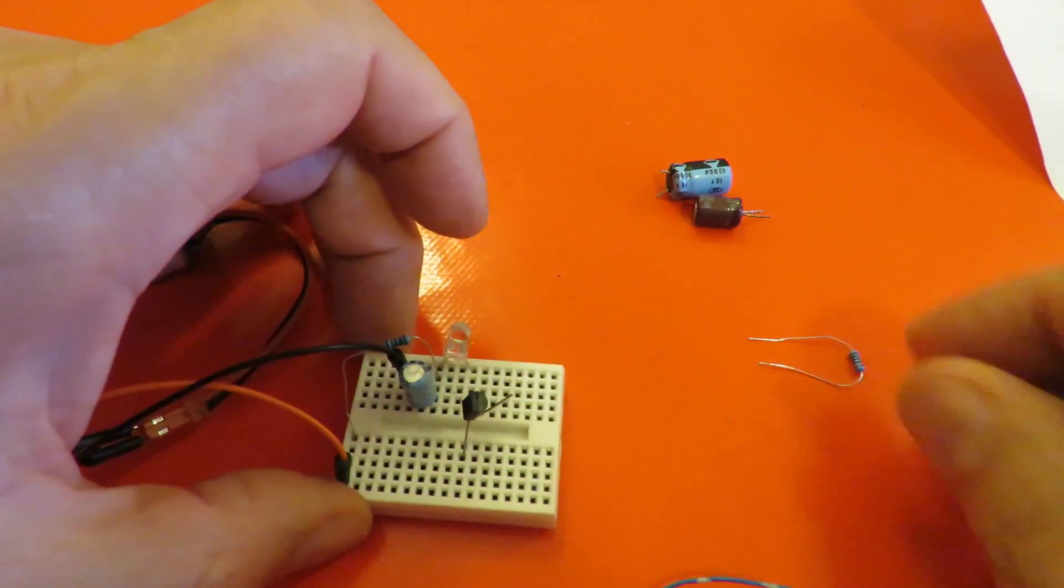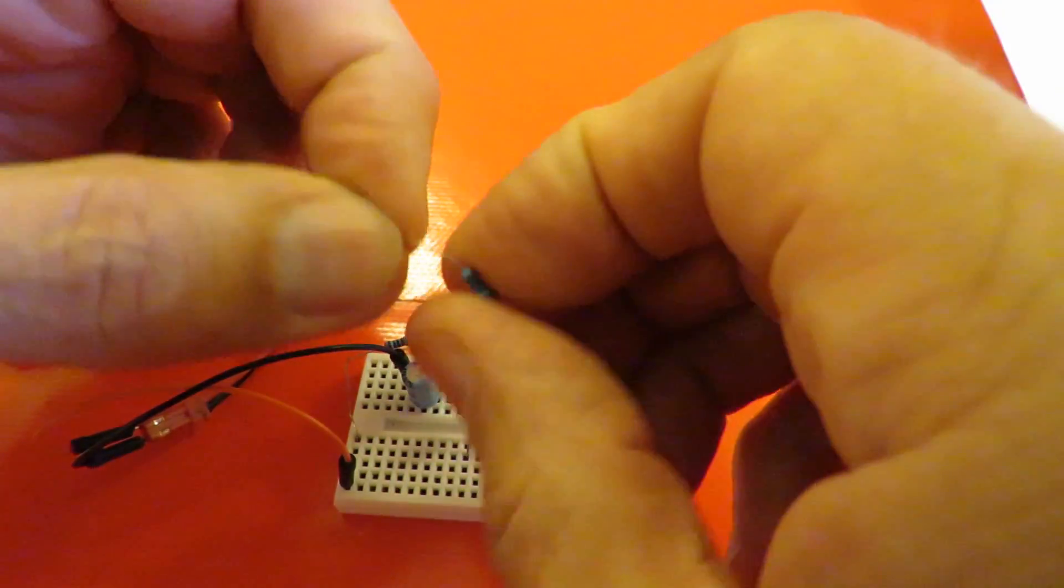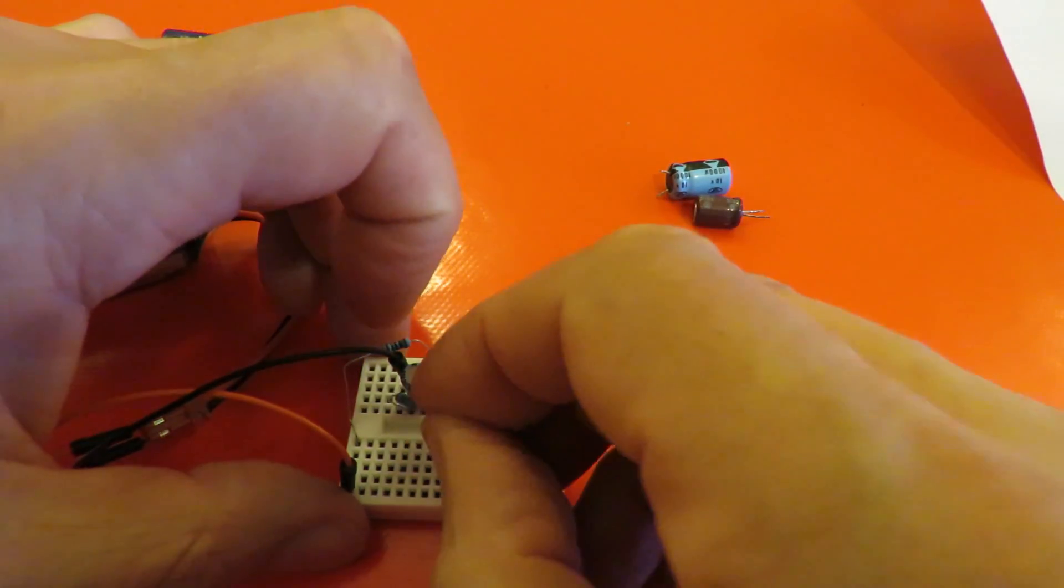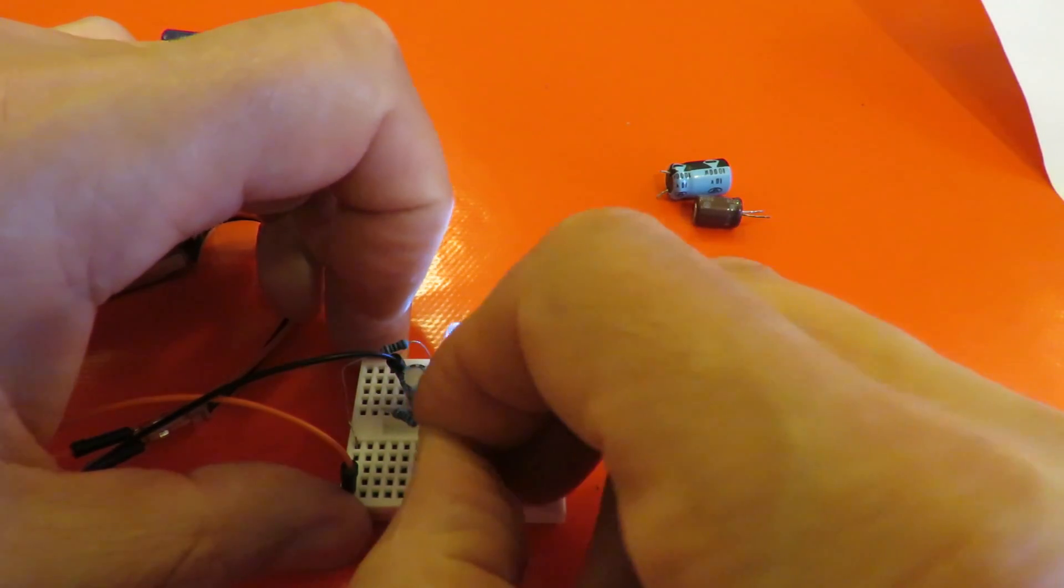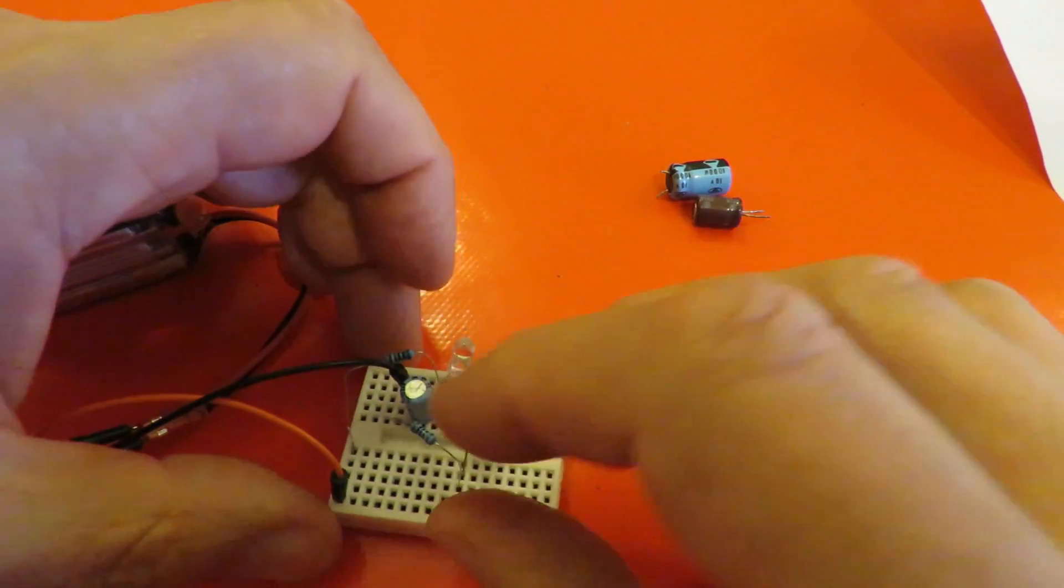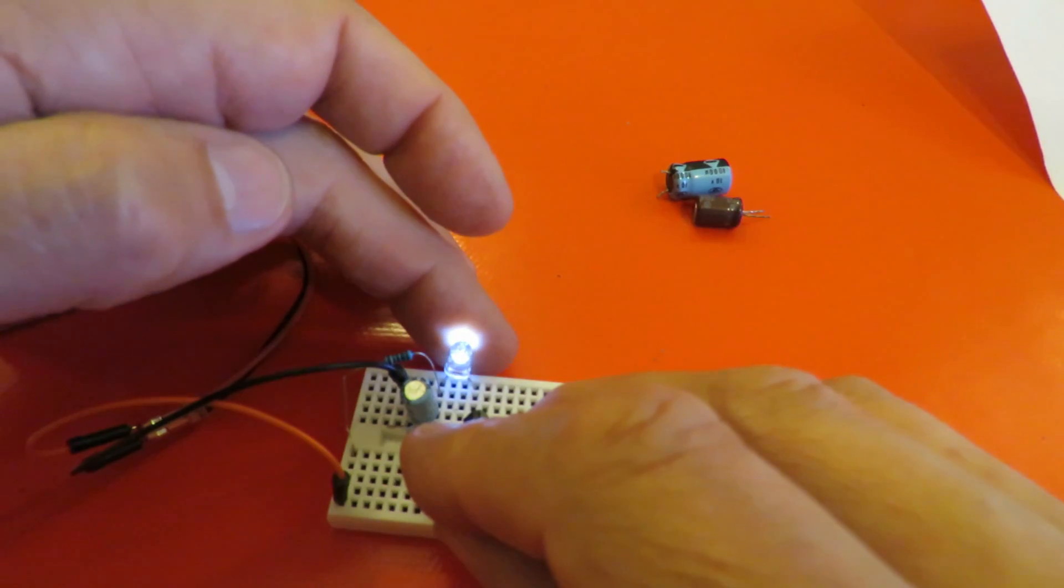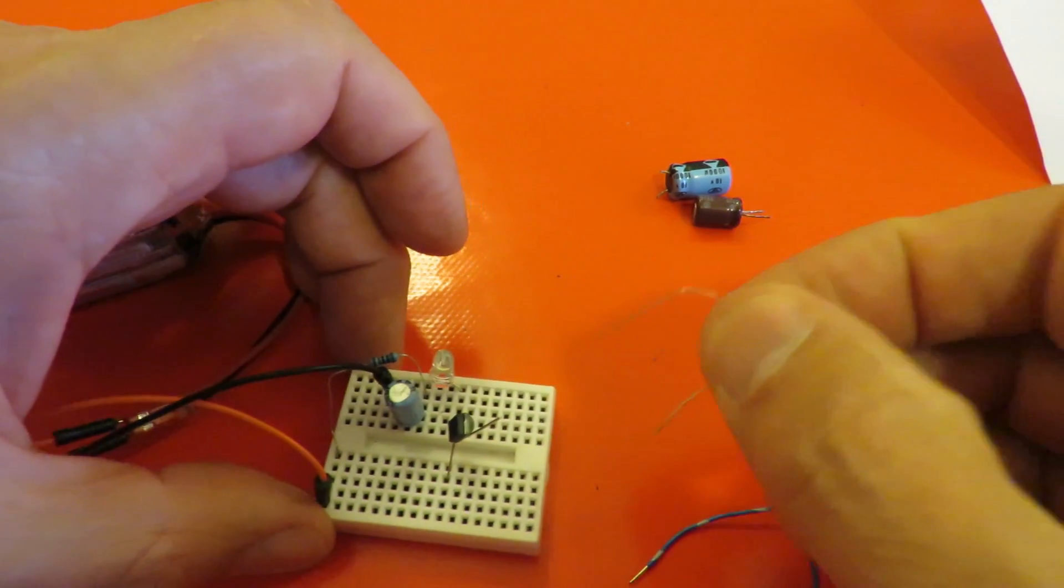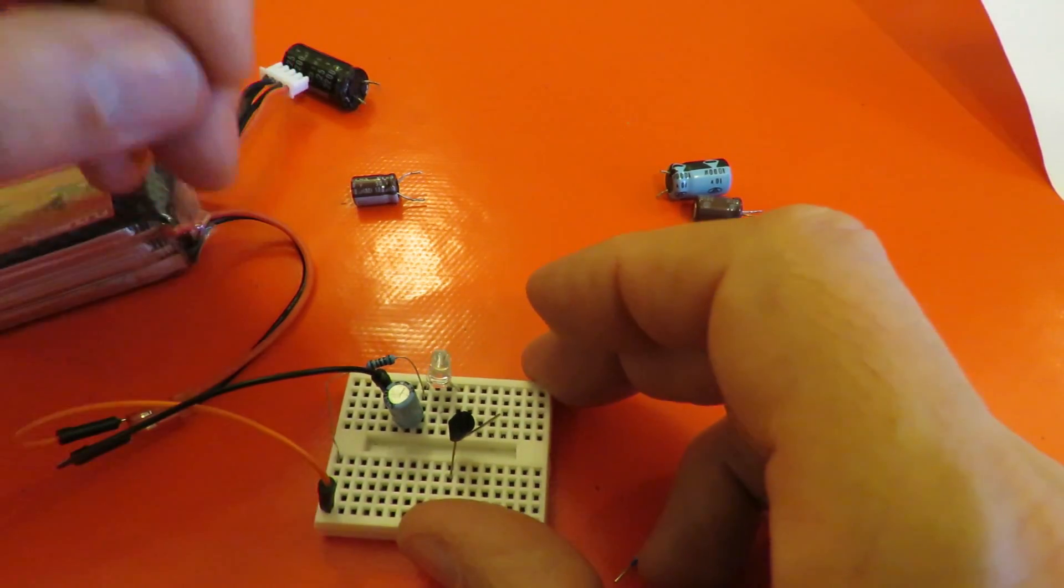What happens if we try the 100 ohm resistor there. Well that's either flashing so fast we can't see it or that's a permanent glow. So putting that one in seems to make all the difference.